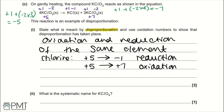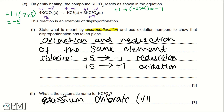Moving on to Part C(ii): what is the systematic name of KClO₄? The answer is potassium chlorate(VII). Potassium because of the K, chlorate because that's the name of the ClO₄ ion - the number in roman numerals is VII because chlorine has an oxidation state of +7. To get the mark you need the correct name with the correct roman numeral.